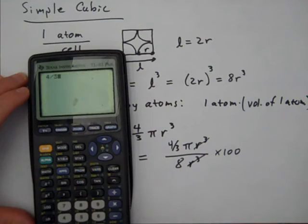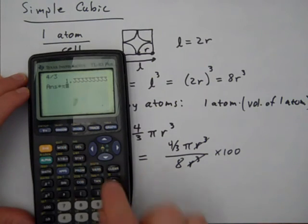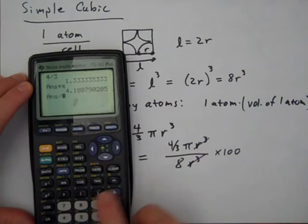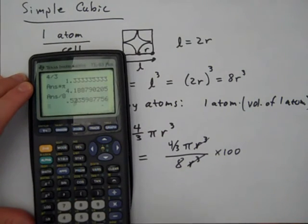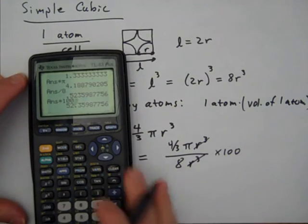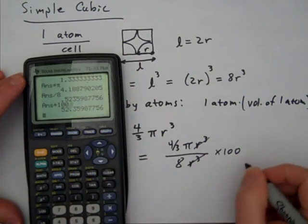So let's see, four divided by three, that's the four-thirds. Then we're going to multiply that by pi times pi. There it is. Equals that. And then we need to divide that by eight. Equals that. And multiply that by 100.